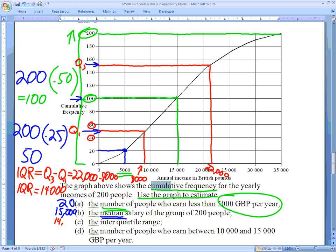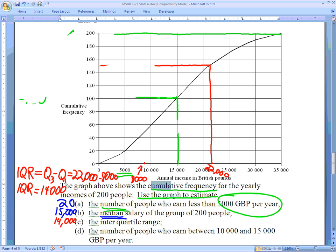And that would be my answer for part C. Last but not least: the number of people who earn between 10,000 and 15,000 Great British pounds per year. I'm going to do some erasing here because it's just too much to focus on for the moment. All right, once again, you'll notice for each and every one of these we did some math, but we also did a lot of drawing on the graph. That won't be any different here.